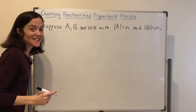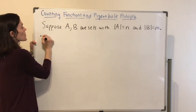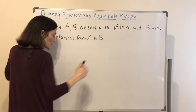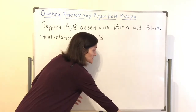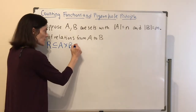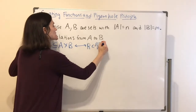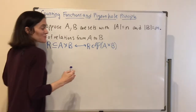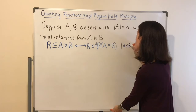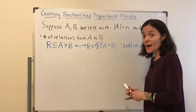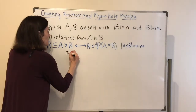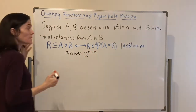Let's think about some things that we can count. First of all, the number of relations from A to B. A relation is any subset of the cross product, which is the case if and only if R is an element of the power set of A cross B. The cardinality of A cross B is N times M, so the power set has size 2 to the N times M. So the number of relations is 2 to the NM.